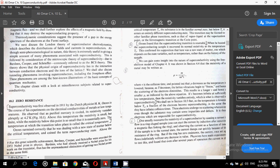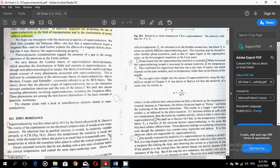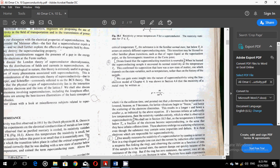Onnes surmised correctly that he was dealing with a new state of matter below the critical temperature and coined the term superconducting state. As the temperature above the critical temperature, written as Tc, the substance is in the familiar normal state, but below Tc it enters an entirely different superconducting state.